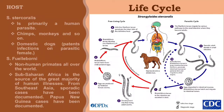For the host, Strongyloides is primarily a human parasite. Strongyloides species are generally host-specific. Other primates such as chimps, monkeys, and so on, as well as domestic dogs, have been found to have patent infections with parasitic females. Domestic cats have been shown to be susceptible to Strongyloides stercoralis infections in the laboratory, but it's unclear whether they serve as a natural reservoir.